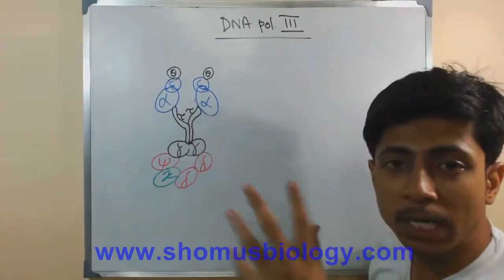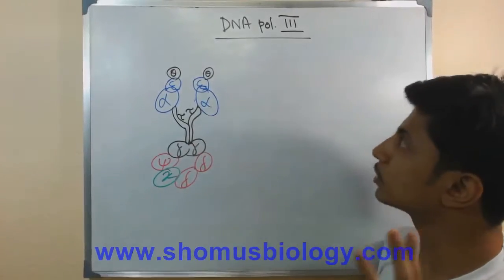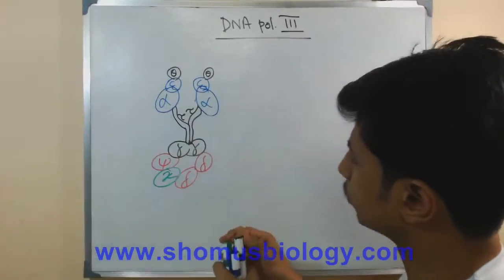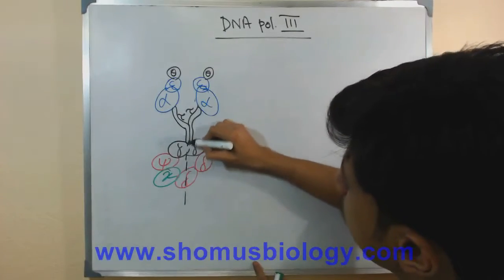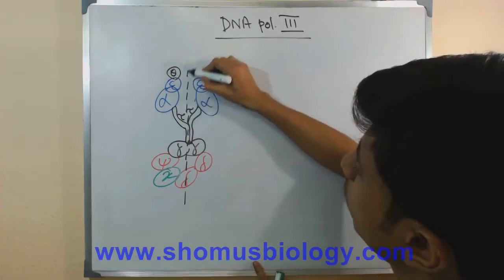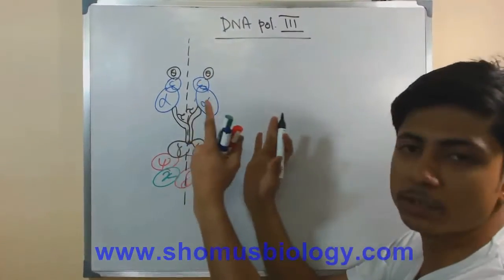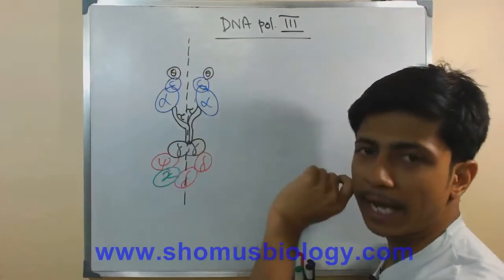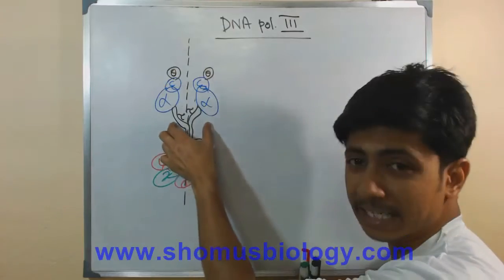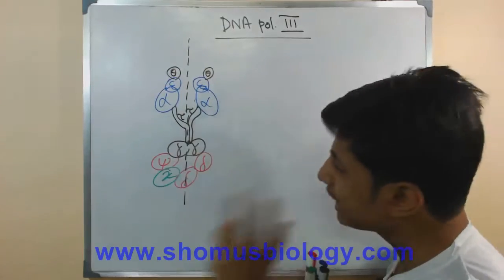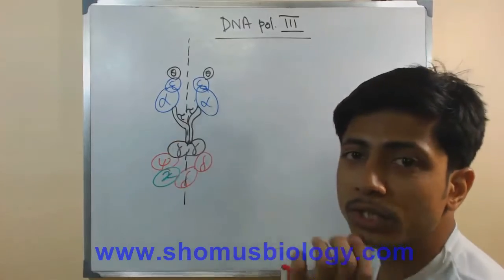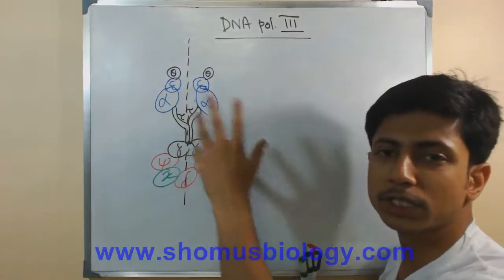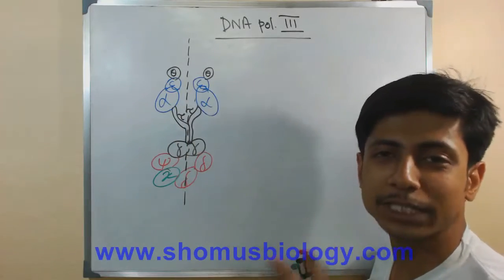They have different subunits. An important feature of DNA Polymerase 3 is that it has two identical, almost hemisphere-like structures — two separate zones. They each contain subunits alpha, epsilon, and theta. These two units are linked by a structure called tau. The tau subunit holds those two hemispheres together.